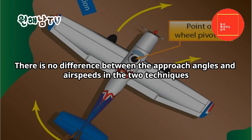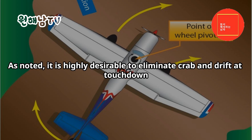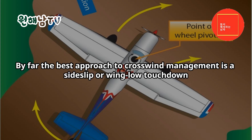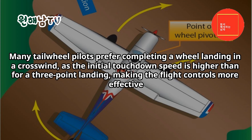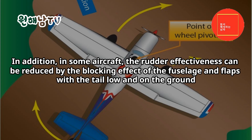Note: the only difference between three-point and wheel landings is the timing of the touchdown — early or later. There is no difference in approach angles and airspeeds between the two techniques. Crosswinds: it is highly desirable to eliminate crab and drift at touchdown. The best approach to crosswind management is a sideslip or wing-low touchdown, where only one main wheel makes initial contact — either in concert with the tailwheel in three-point landings, or by itself in wheel landings. Many tailwheel pilots prefer wheel landings in a crosswind as the higher initial touchdown speed makes flight controls more effective. In some aircraft, rudder effectiveness can be reduced by the blocking effect of the fuselage and flaps with the tail low and on the ground.